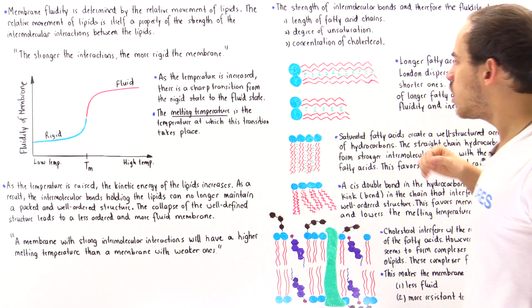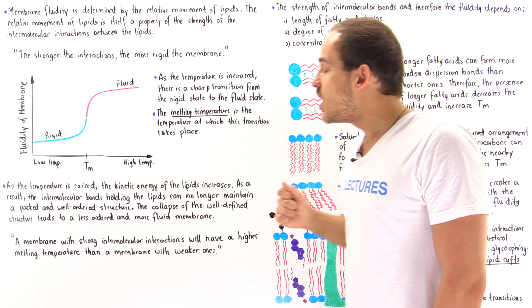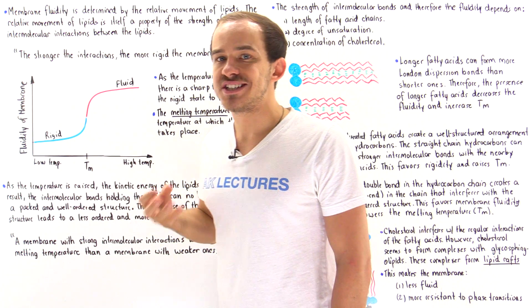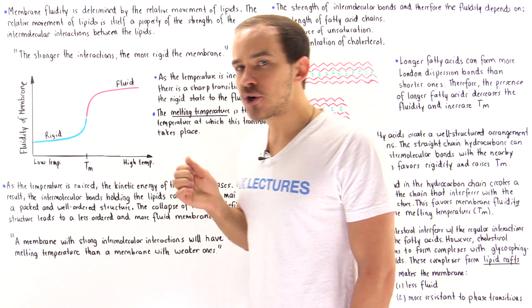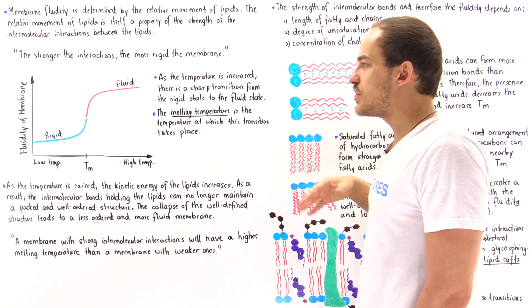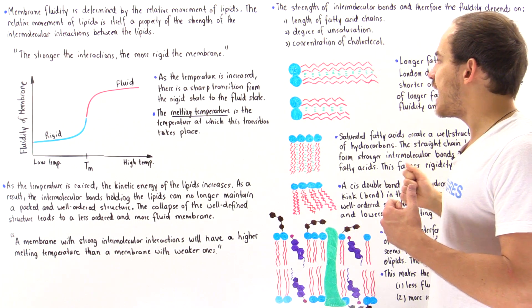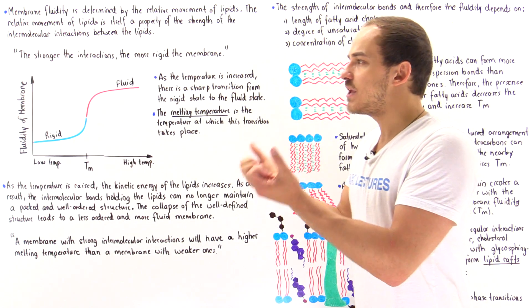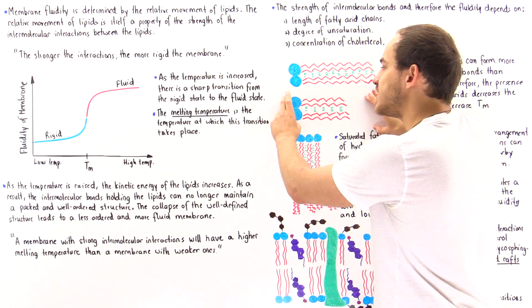Because of the difference in length, the longer fatty acids have many more interactions — specifically, many more London dispersion forces that can potentially form compared to the shorter ones. If a membrane consists of these longer fatty acids, the overall strength of intermolecular interactions in that membrane will be greater than in a membrane with shorter fatty acids.